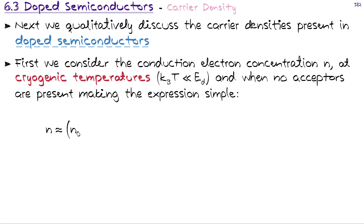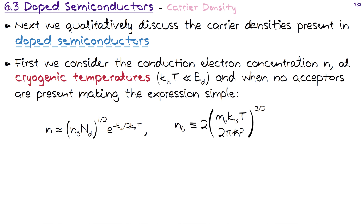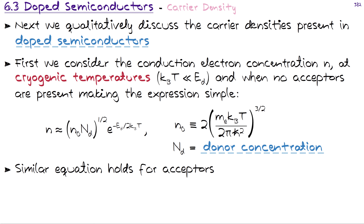The electron concentration n equals the square root of n₀ times Nᴅ, where Nᴅ is the donor concentration. There is an exponential dependence on minus Eᴅ, the ionization energy associated with the donor state, divided by 2kT. The parameter n₀ relates to temperature: n₀ equals 2 times mₑ (the effective mass of the electron at the conduction band) times kT divided by 2π ℏ² to the power of 3/2. A similar equation holds for acceptors, where we would assume no donors are present.